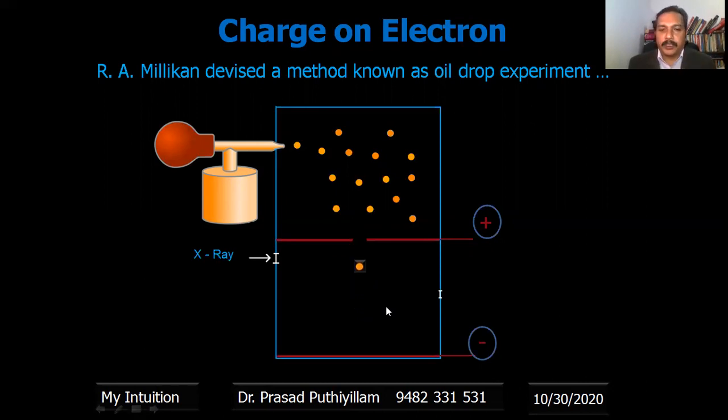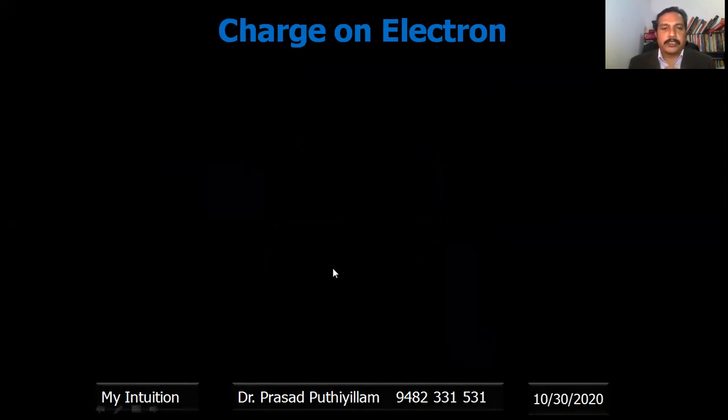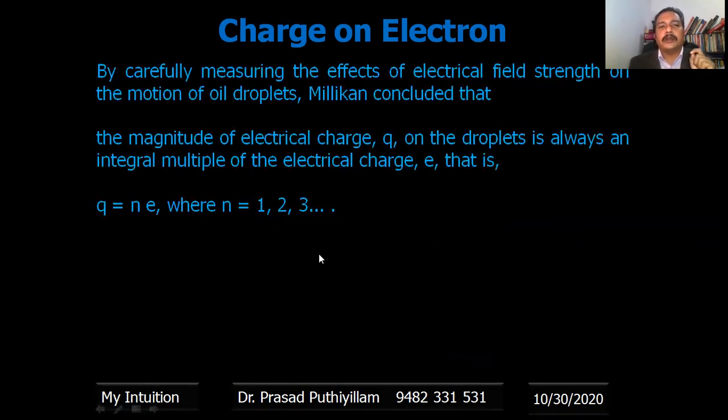Now this movement of these charged particles or this oil dropper which is having the charge can be observed through a telescope. We can measure the distance covered and how much voltage is applied or current is applied - all this can be measured. Based on this experiment, by carefully measuring the effect of the electric field strength on the motion of oil droplets, Millikan concluded that: